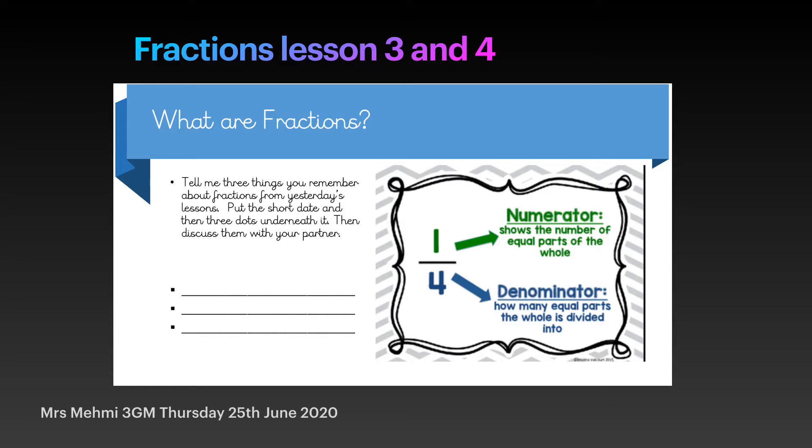If you look closely at the diagram, there is a fraction. It says 1 fourth. Remember, the top number is the numerator and it shows the number of equal parts of the whole. The bottom number is called the denominator and this shows how many equal parts the whole is divided into.